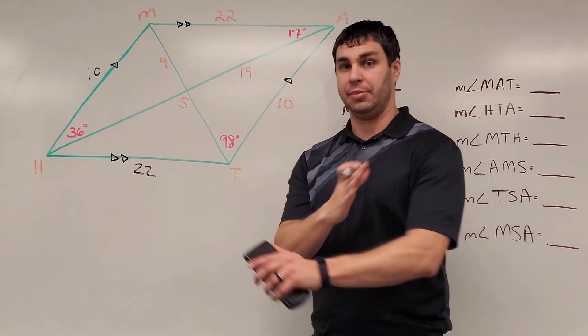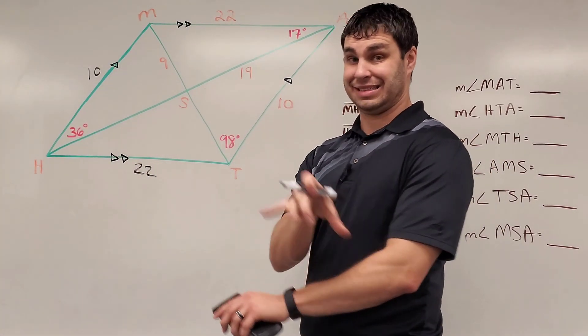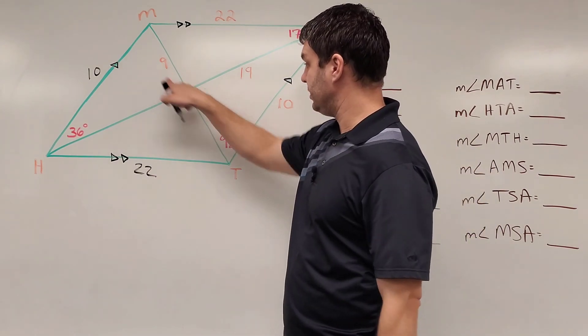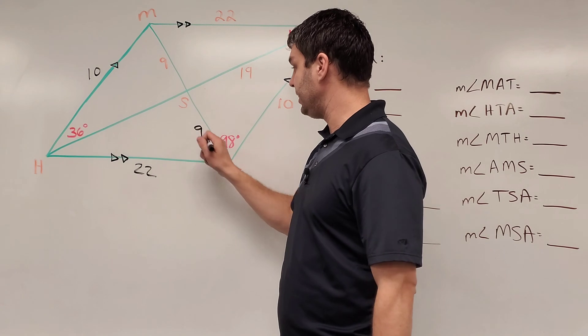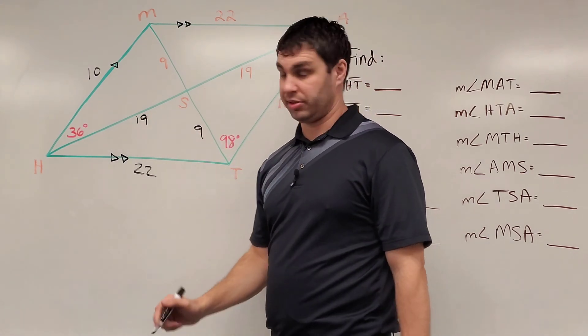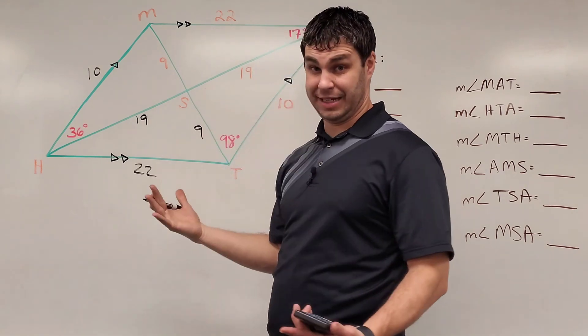Okay, we also know the diagonals in a parallelogram bisect each other, meaning that one cuts the other one in half, and likewise so does the other one. So here, if this is 9, the other half is also going to be 9. This is 19, this is also 19. Okay, this half and that half would be the same.